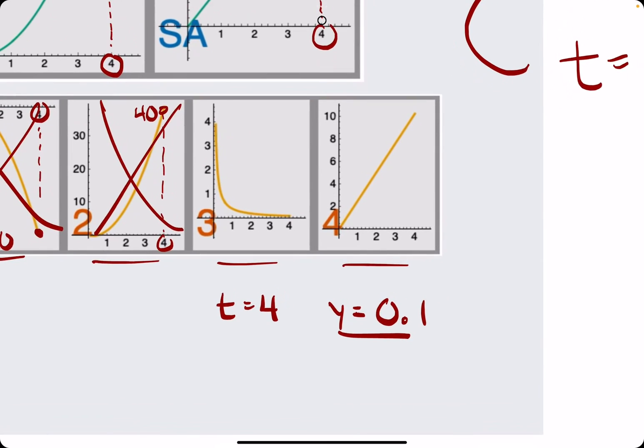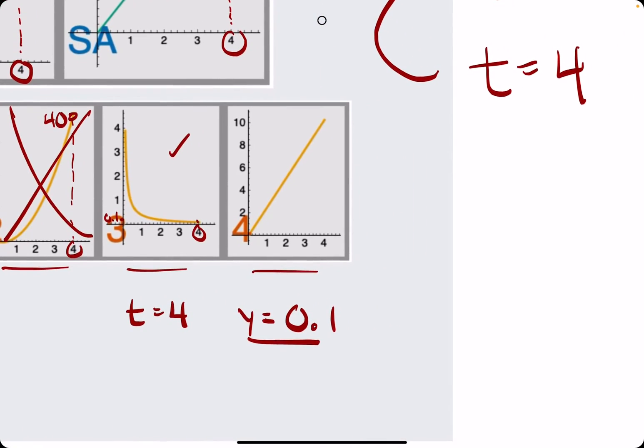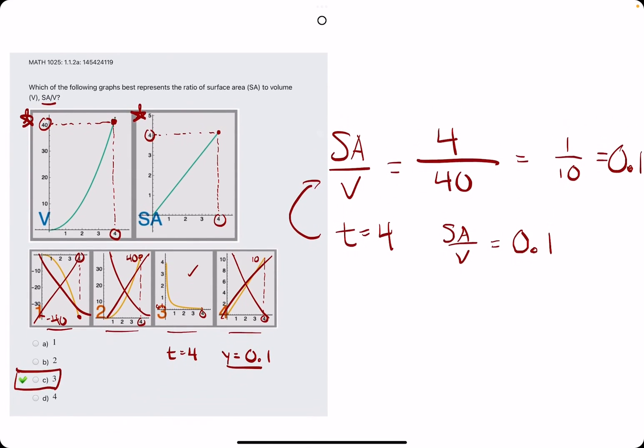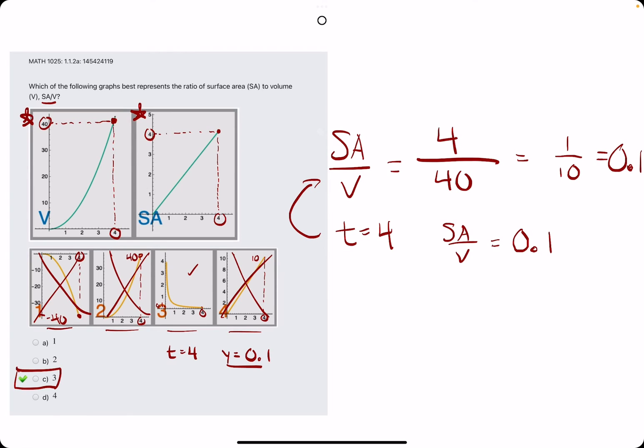We look at graph 3 at 4. The Y value is very small, and it could make sense that it's 0.1. So that's a good maybe so far. And then let's check number 4 just to make sure. Graph number 4 at time 4 has a Y value of about 10. So that can't be 0.1. So it looks like 3 is our best answer. So we break out the eraser, and we see that 3 is our answer. C is our answer.